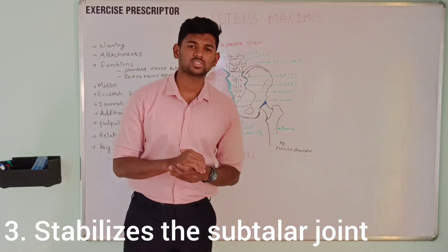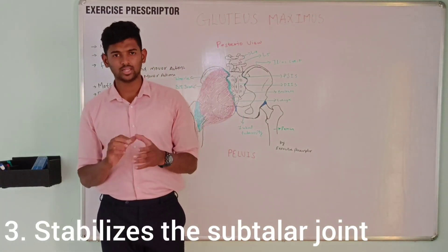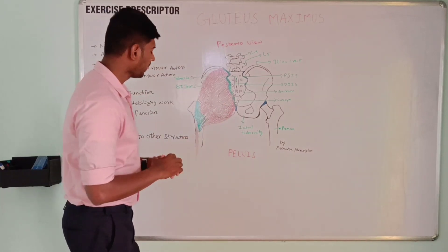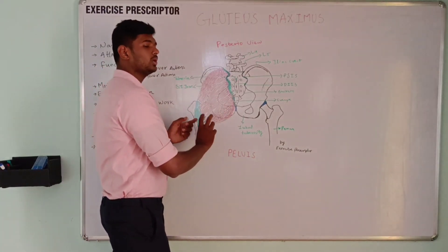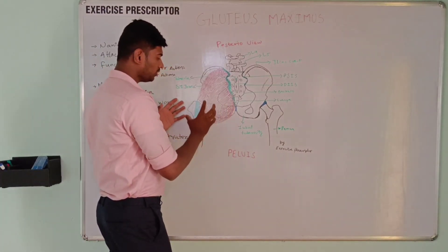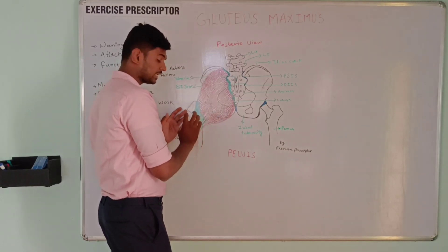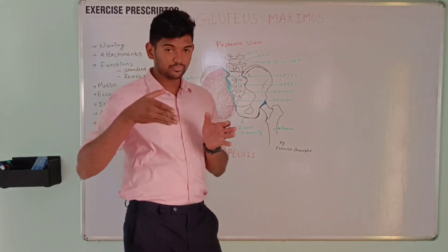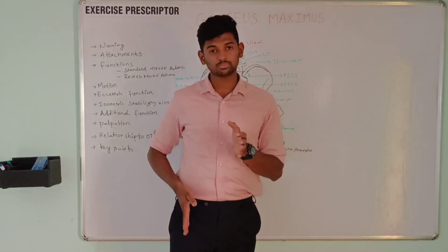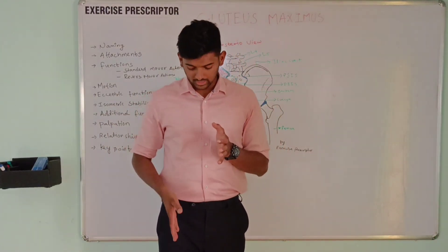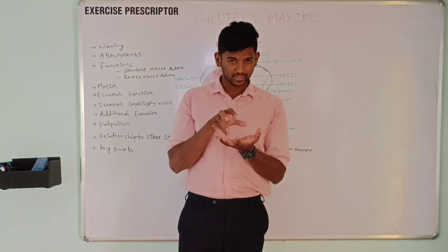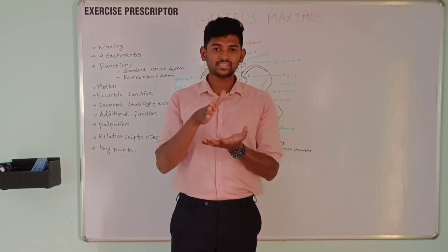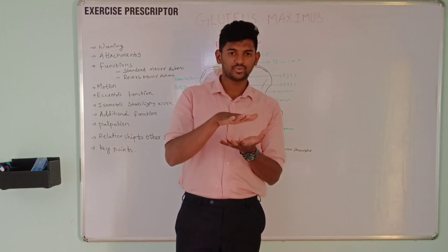The third stabilization function is stabilizing the subtalar joint. How it stabilizes the subtalar joint: gluteus maximus helps to laterally rotate the femur — when you contract the glute, it helps to laterally rotate the femur. All the rotational forces are transmitted over the talus; the talus transmits the forces through the subtalar joint, which helps to supinate the foot. So it prevents excessive pronation.